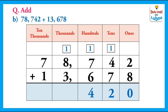Next, we will add the thousands: one plus eight equals nine, and nine plus three equals twelve. So we regroup the thousands, write two in the thousands column, and put one carry on the ten-thousands column. After that, we add the ten-thousands: one plus seven plus eight plus one equals nine. So the answer is ninety-two thousand four hundred and twenty.